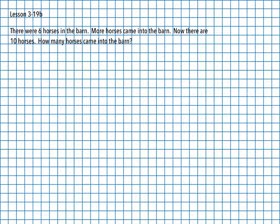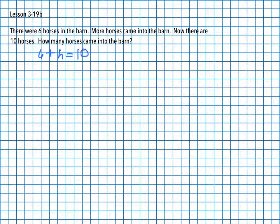When we look at this problem — six horses in the barn, more horses came into the barn, now there are ten horses — if we were to set up an equation, the kind of equation this is is a situation equation, because it is exactly what the situation is. We have six horses, more horses came in, so we're going to add — we don't know how many — so we're just going to add h. Now there are ten horses, so our equation is six plus h equals ten.